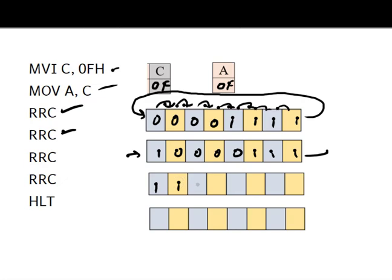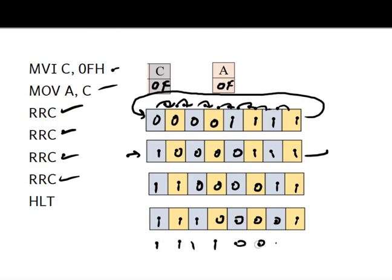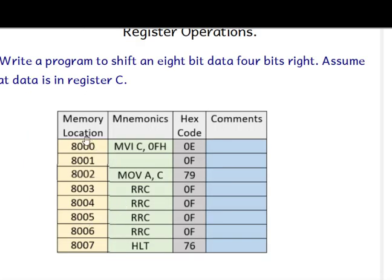After one more RRC we get 11100001, and after a fourth RRC the rightmost one comes to the left. So after four rotations, register A contains F0 — because the four ones form F and the four zeros form 0.